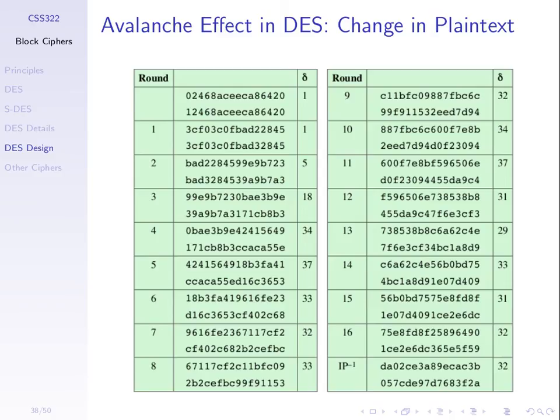We start with two different plaintexts P1 and P2, and the column delta shows the number of bits currently different — initially one. DES uses 16 rounds. After the first round they still differ by just one bit, the same as the input. After the second round they differ by five bits. After about four or five rounds the difference reaches around 30, varying around 32 — going up to 34, 37, then fluctuating. We'd like it to average out around 32.